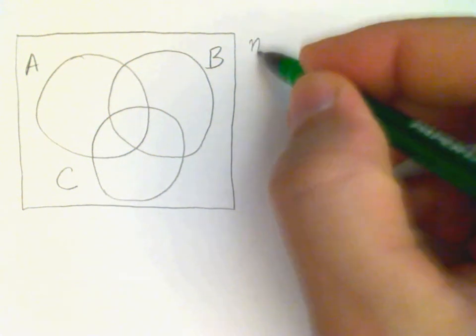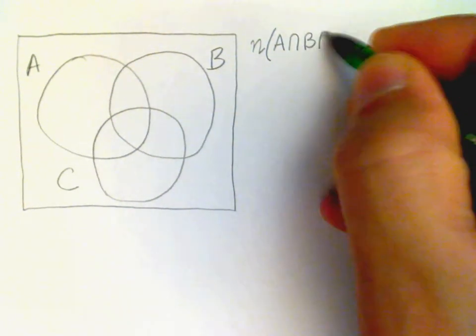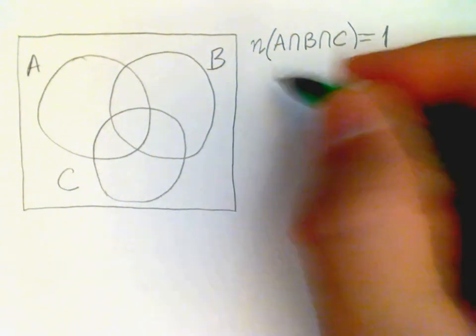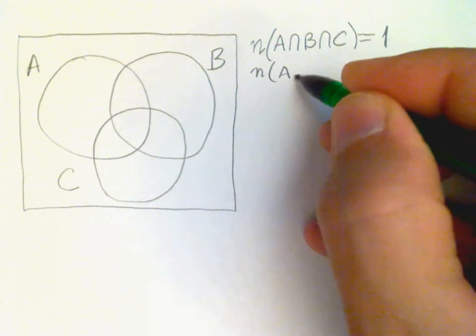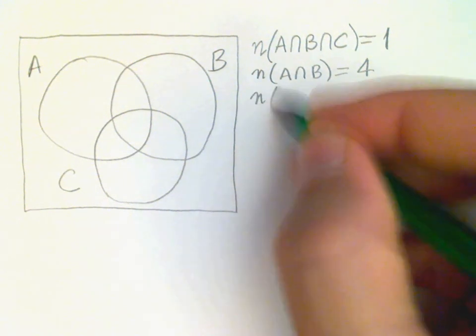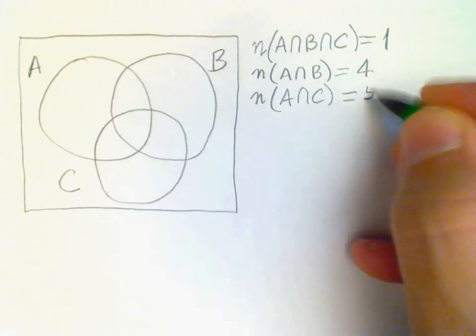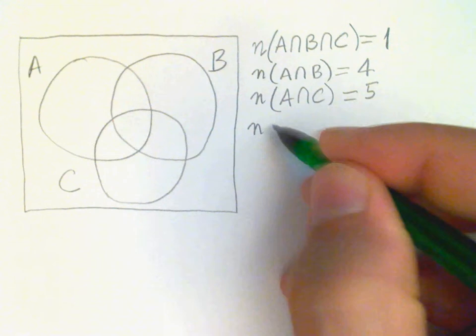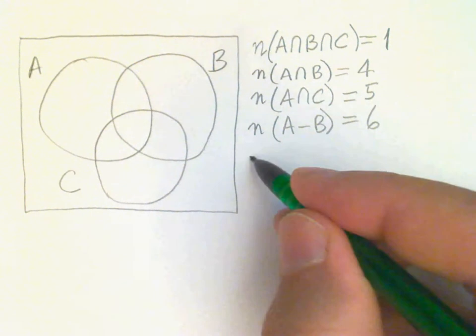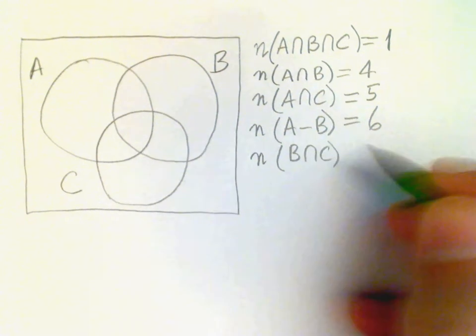The number in the intersection of all 3 sets is 1. The number in the intersection of A and B is 4. The number in the intersection of A and C is 5. The number in the set difference A minus B is 6. The number in the intersection of B and C is 3.